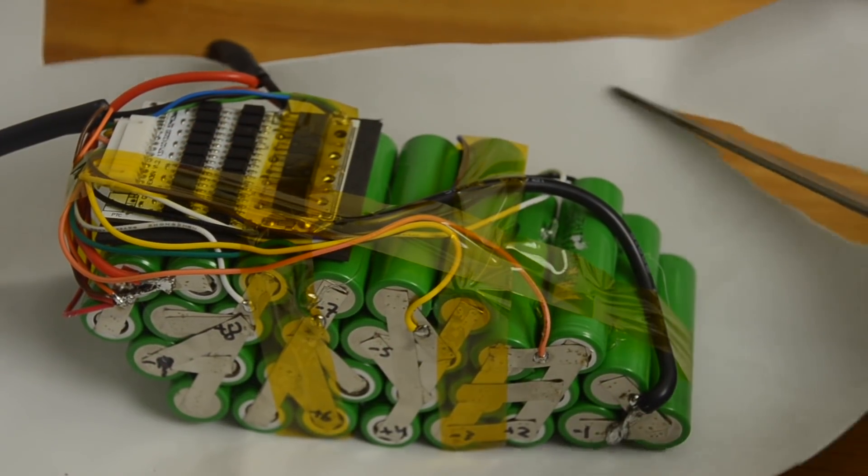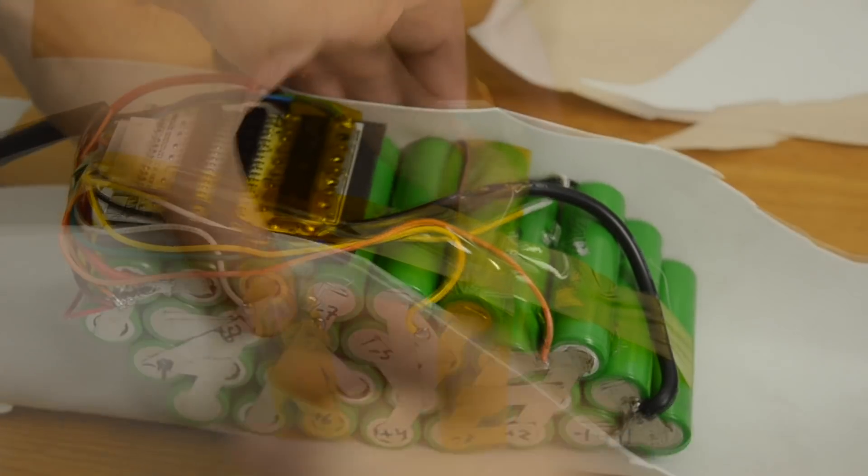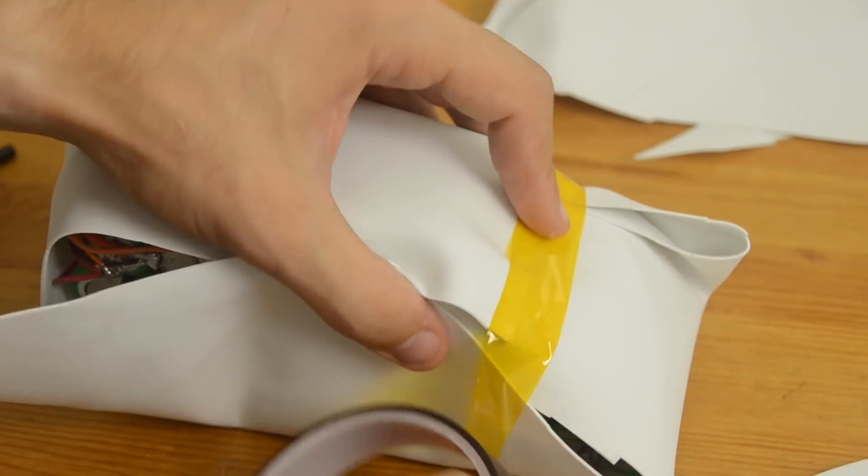Before heat shrinking, I like to use a thin 1mm sheet of craft foam to cover the battery and create a small layer of vibration and bump protection.